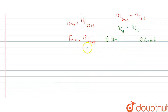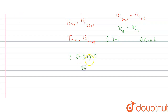From the first case, we get 2R+3 equals R-3, which gives us 2R minus R equals R, and -3 minus 3 equals -6. So the value of R will become minus 6.